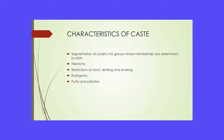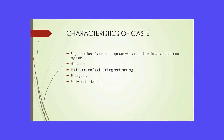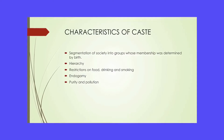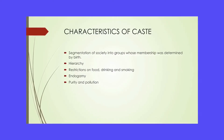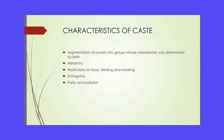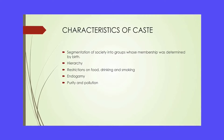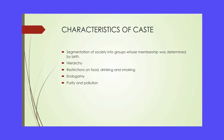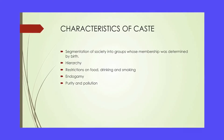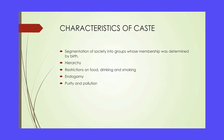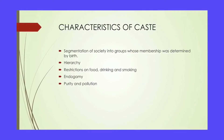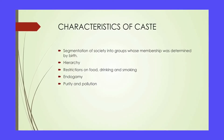What are the characteristics of a caste system? The caste system consists of: segmentation of society into groups, hierarchy, restrictions on food, drinking and smoking, endogamy, and the concept of purity and pollution.